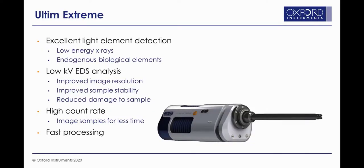To summarise, the Ultim Extreme detector has excellent light element detection, ideal for low energy X-rays and endogenous elements in biological samples. Because it can detect low energy X-rays, it can operate under low kV conditions in an SEM, which improves image resolution, improves sample stability, and reduces damage to beam-sensitive specimens like most biological samples. It also maximises the count rate by having a large area detector, meaning you can image samples for less time. Optimised electronics make the system faster with much less noise, optimising the signal-to-background ratio in the spectrum and facilitating identification. The Ultim TLE is the TEM equivalent — a windowless detector for TEM.